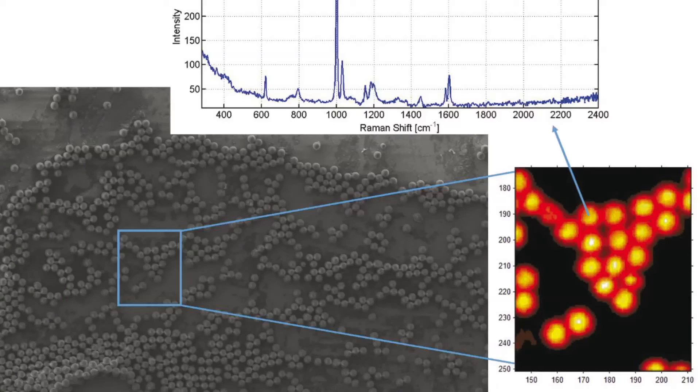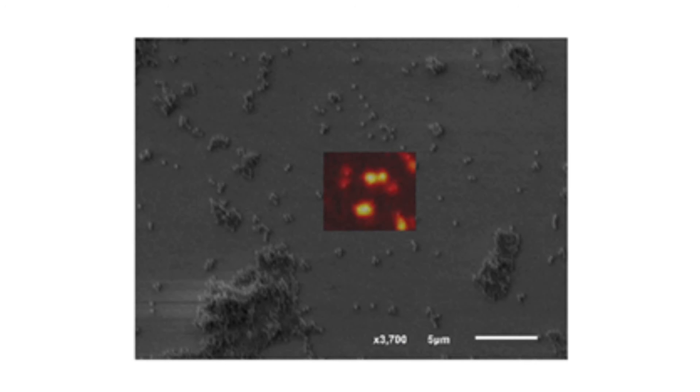The Raman image of polystyrene beads is directly correlated with the SEM image. Isolated beads as small as 280 nanometers can readily be detected.